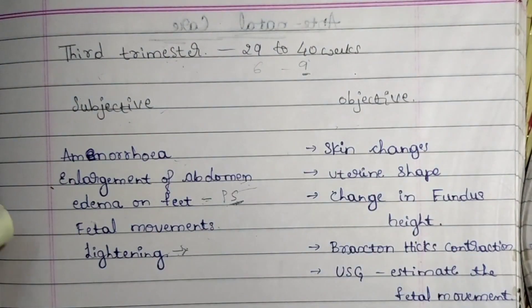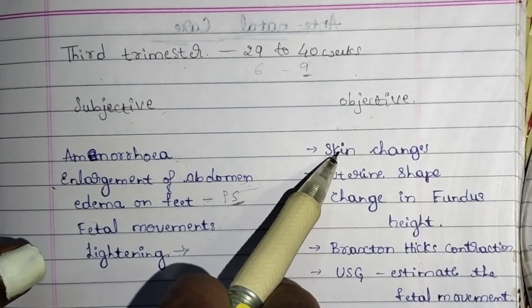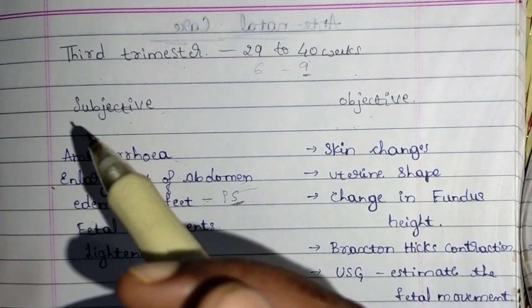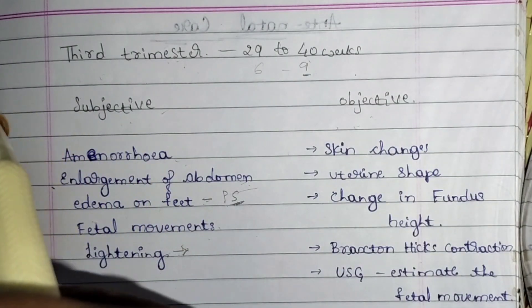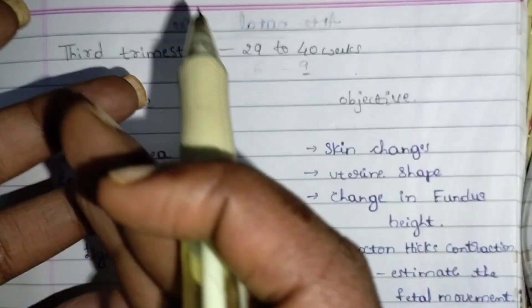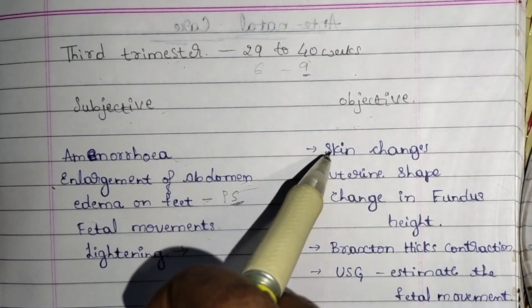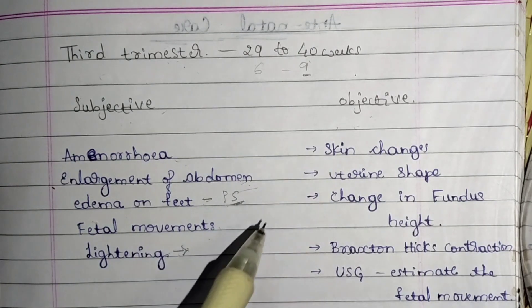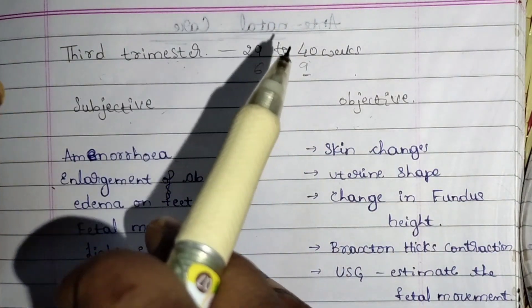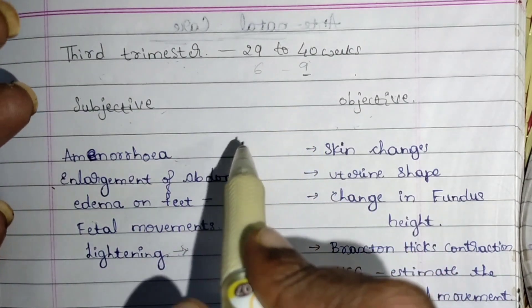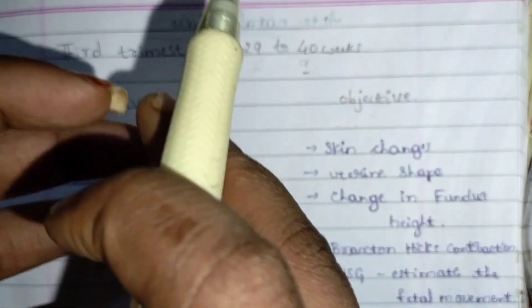Fetal movement can also be commonly seen as a subjective symptom. For objective data, we first have skin changes: chloasma — that is pigmentation on the face — linea nigra, which is the dark line on the abdomen, and stretch marks. These can all be seen in the third trimester. The uterine shape is cylindrical throughout pregnancy and becomes spherical at the time of delivery.